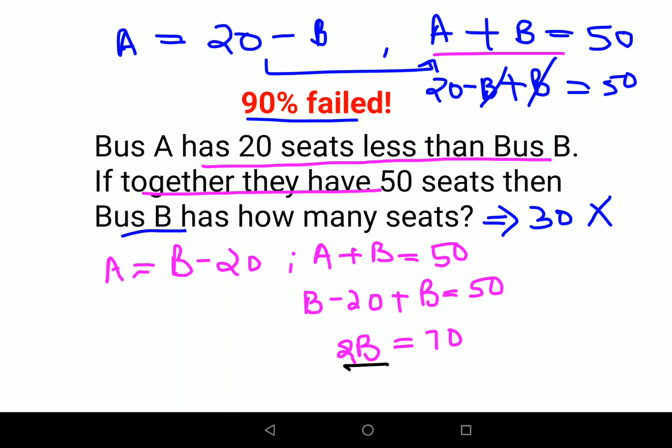In order to find the value of B, we will divide by 2 on both sides. Therefore, Bus B has 35 seats. Not 30—this is absolutely wrong.